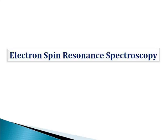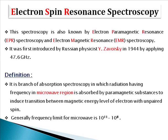Electron spin resonance spectroscopy is also known as electron paramagnetic resonance spectroscopy (EPR) and electron magnetic resonance spectroscopy (EMR). This spectroscopy was first introduced by Russian physicist Evgeny Zheovsky in 1944 by applying a 47.6 GHz frequency using a copper salt. The basic principle of ESR spectroscopy is closely related to NMR spectroscopy, but the application and instrumentation are quite different.